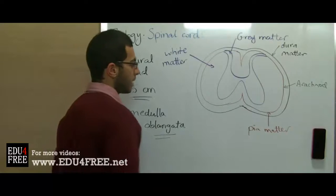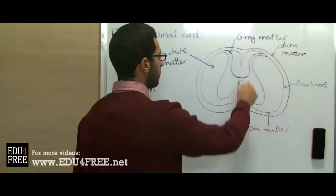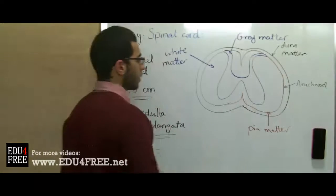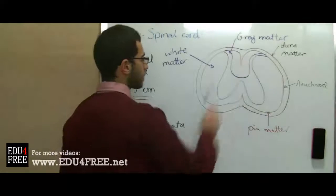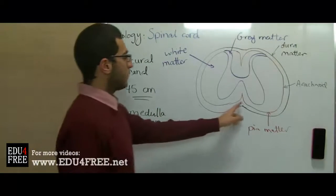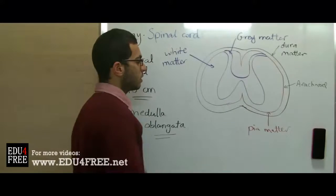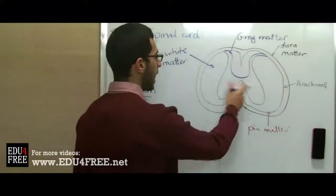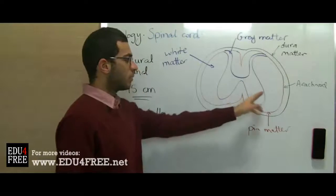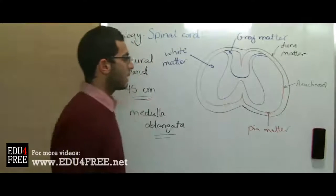At the middle of the spinal cord there are two fissures, and these two fissures divide the spinal cord into two halves, but not completely, because they are joined together.